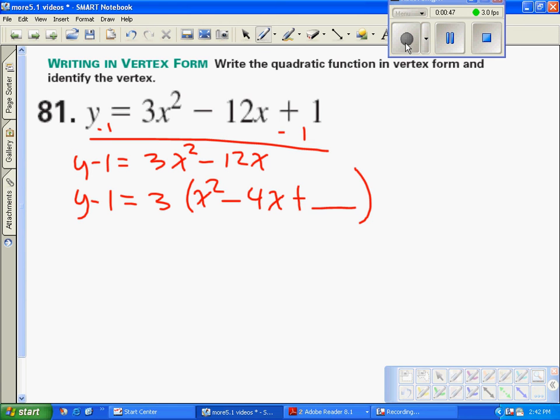Negative 4 divided by 2 is negative 2, squared is 4. Now, the problem is this 3 out front makes that 4 a 12, so we have to add 12 to both sides.